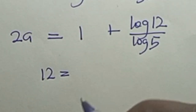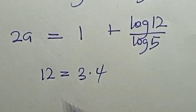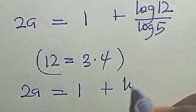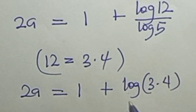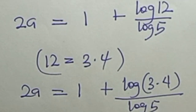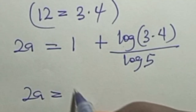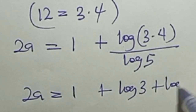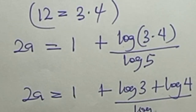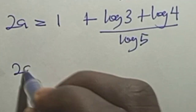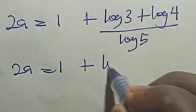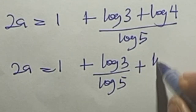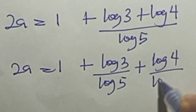Now, 12 can be written as 3 times 4. So 2a equals 1 plus log of 3 times 4, over log 5. Applying the product rule again: 2a equals 1 plus log 3 plus log 4, all over log 5. Separating: 2a equals 1 plus log 3 over log 5 plus log 4 over log 5.